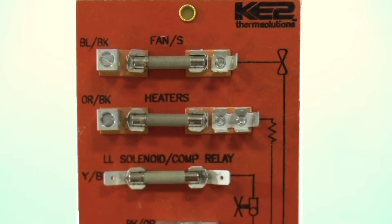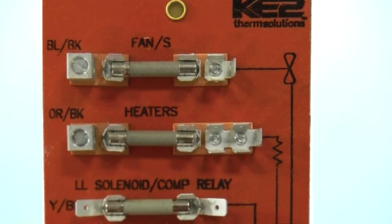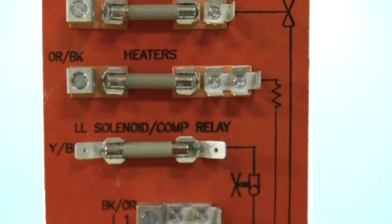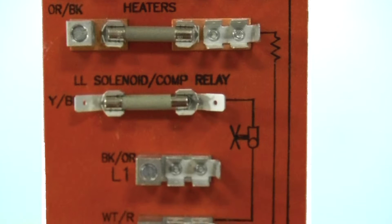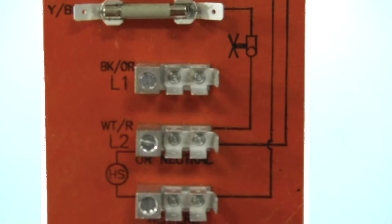The controller comes with a terminal board that has several benefits. Number one, it makes it easy to wire the controller. Two, it makes it easy to follow the wiring logic on future service calls. And three, it provides fuse protection for the controller relays.